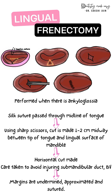Care should be taken to avoid injuring the submandibular duct or blood vessels. The tongue is then retracted superiorly, and undermining of the tissues or mucosa is performed. Dissection of the genioglossus muscle fibers is also done if required, always avoiding the submandibular duct orifice. Lastly, sutures are given in the vertical direction — the cut is made horizontally and sutures are placed vertically.